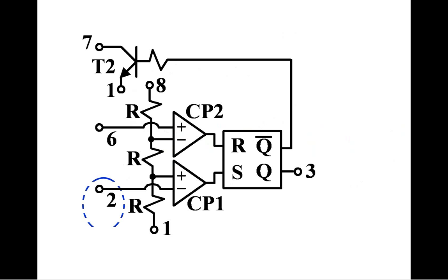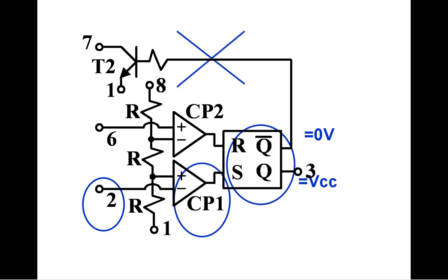When V2 reaches one-third of Vcc, comparator CP1 goes high. Setting set reset latch output is then high and inverted output is low. Blocking discharging transistor. And then everything repeats. As simple as that.